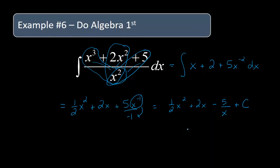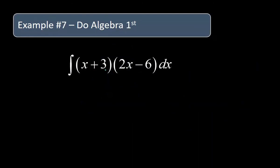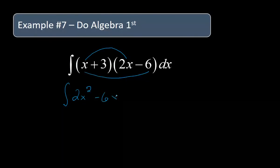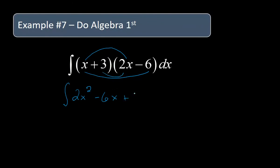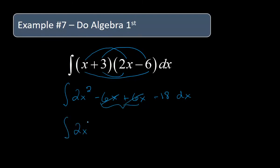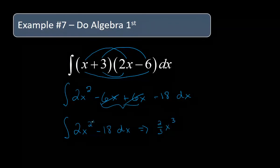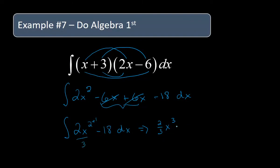For our last one, we have to remember how to do some basic FOIL. We're going to multiply this out first, and we wind up with two x squared minus six x plus six x — nice, because the middle terms cancel — and then minus 18. Combining like terms, those cancel, so we're going to have the integral of two x squared minus 18. Now we apply the power rule: we'll have two thirds x cubed, raise power by one, divide by that new power, and then minus 18x, and plus C.